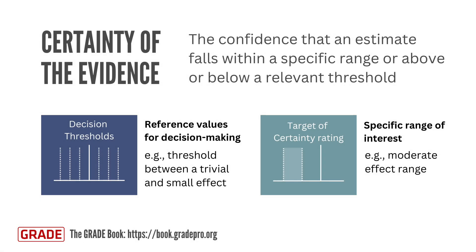Central to the assessment of certainty of the evidence are two key concepts: decision thresholds and the target of the certainty rating. Decision thresholds are reference values that guide judgments about both the size of the effect and the associated certainty of evidence. Eventually, they would also inform judgments about the balance of effects, but for now we will focus on their role in the certainty assessment.